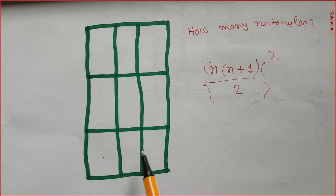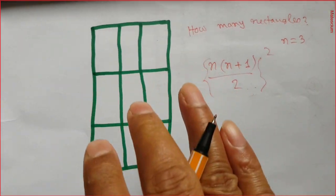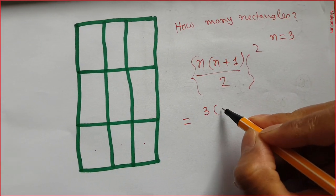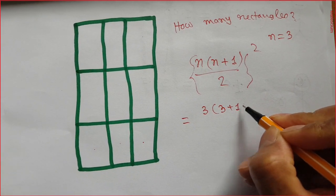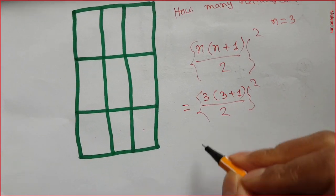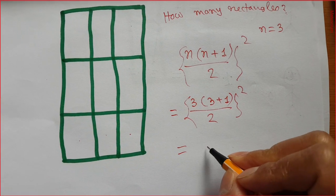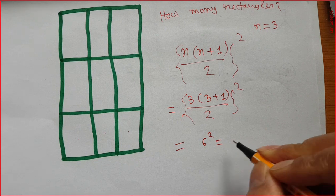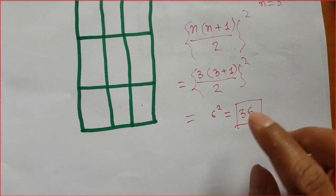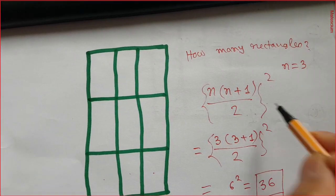Looking at this side, we count 1, 2, 3 — so n = 3. Calculating: 3 times (3+1) divided by 2, whole squared. That's 3 times 4 = 12, divided by 2 = 6, and 6² = 36. So this area has a total of 36 rectangles. This is a very simple way — just use this formula.